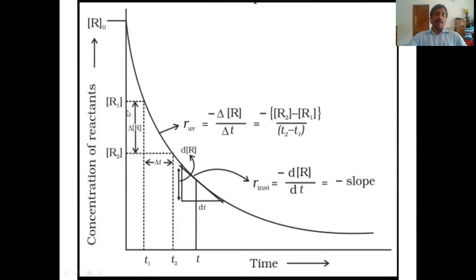When you calculate average rate using reactants, the equation changes to minus delta concentration of R divided by delta t. As in the previous case, take t1 and t2, measure the concentration of reactant R1 at t1 and R2 at t2. Delta t is t2 minus t1, and delta concentration of R is the difference between the concentrations.